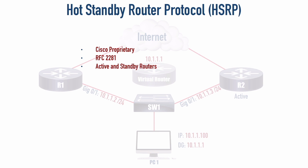We've got a couple of versions of HSRP. Version 1 is going to assign a MAC address to the virtual router beginning with a vendor code of five zeros and a C, followed by 07AC. The last two hexadecimal digits represent the HSRP group number. Version 2 uses the three rightmost hexadecimal digits to represent the HSRP group number, so we could have more group numbers.